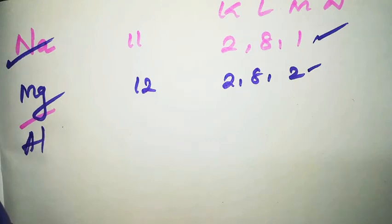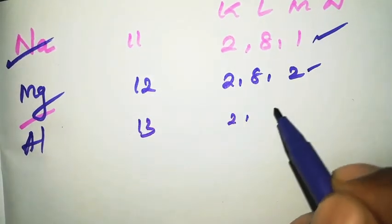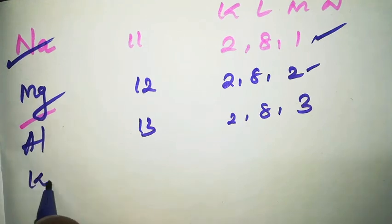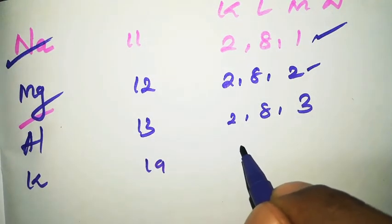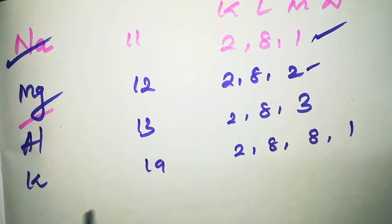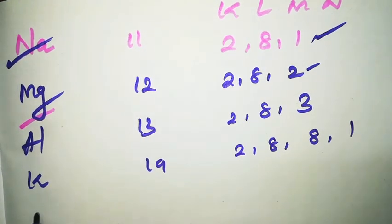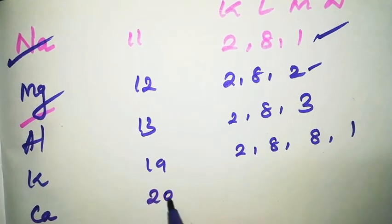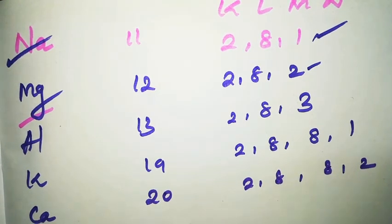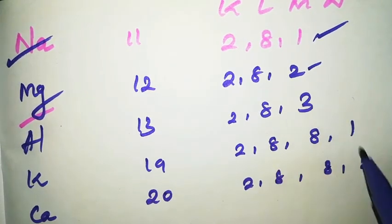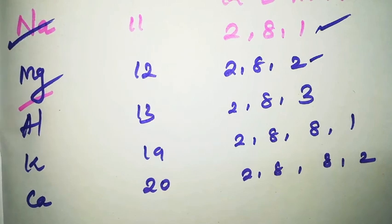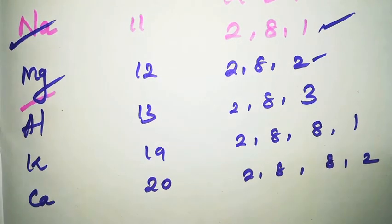Aluminium has atomic number 13, configuration 2, 8, 3 - 3 electrons in the outer shell, so it is reactive. Potassium has atomic number 19, configuration 2, 8, 8, 1 - highly reactive. Calcium (Ca) has atomic number 20, configuration 2, 8, 8, 2 - also reactive. These elements have free electrons in the valence shell, making them more reactive.